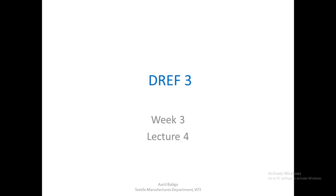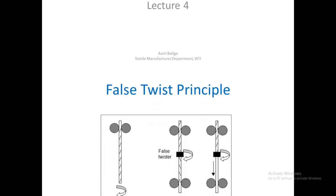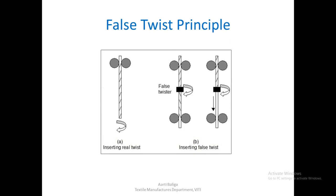Today we are going to study DREF 3, which is subclassified under the false twist spinning process. It is just an extension of DREF 2. Let us revise the false twist principle: the first arrangement inserts false twist, whereas if the clamps are not moving — a rigid clamp — the false twister puts equal and opposite turns on both sides. As the yarn moves, as soon as the material comes out of the false twister, it will have zero twist.